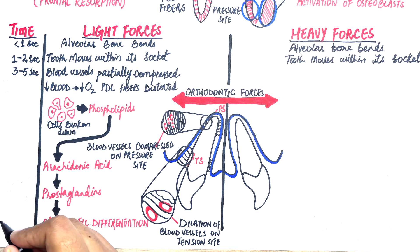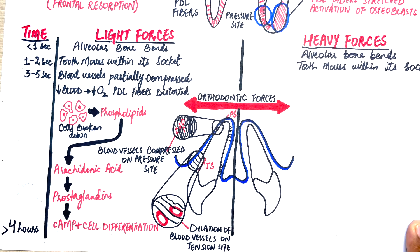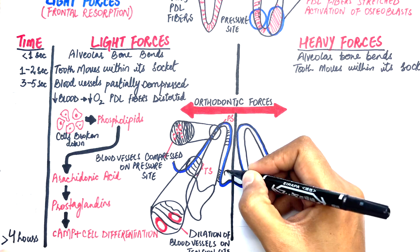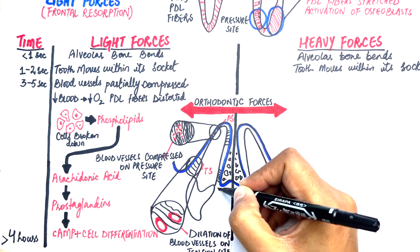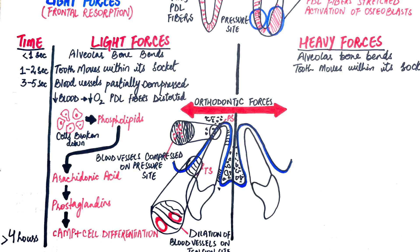The resorption of the alveolar bone occurring as a result of the application of light orthodontic forces is called frontal resorption, as the resorption is done inside out and starts from the lamina dura of the socket.